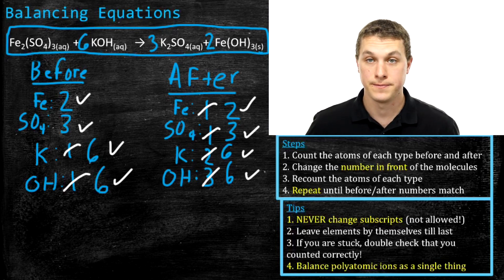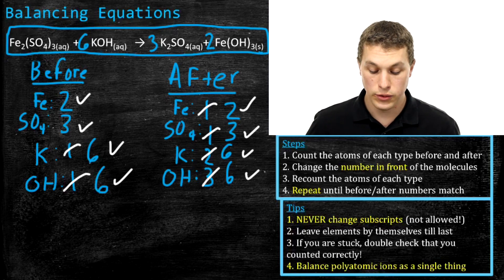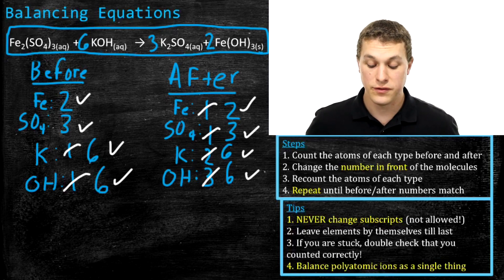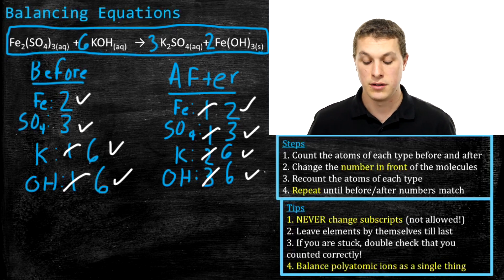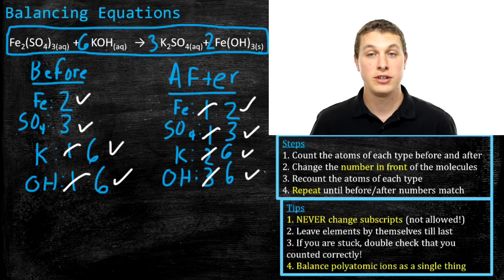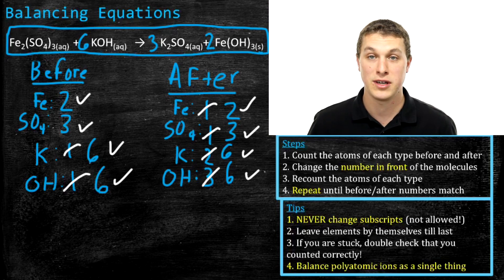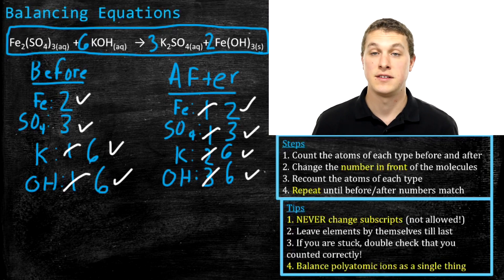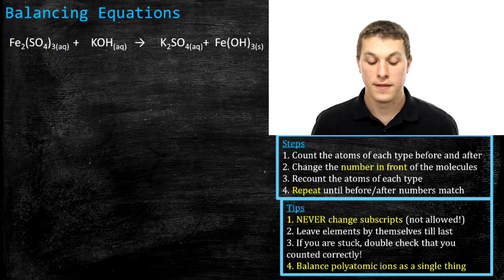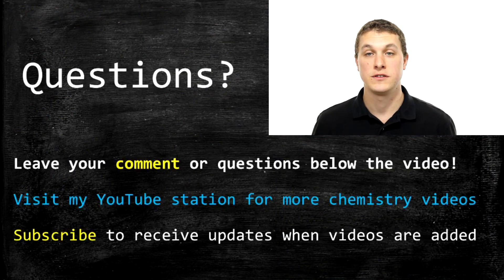That's your final balanced equation. To review the tips: first, never change the subscripts — that will change your compound. Second, if you see any elements by themselves, like aluminum or oxygen alone, leave those until last. If you get stuck, double-check how many elements you have on each side — it's very easy to make a math error early in balancing, and mistakes can sometimes make it seem impossible to balance. Finally, balance polyatomic ions as single chunks. Thanks for watching this episode of Real Chemistry — if you have any questions, please leave them below.